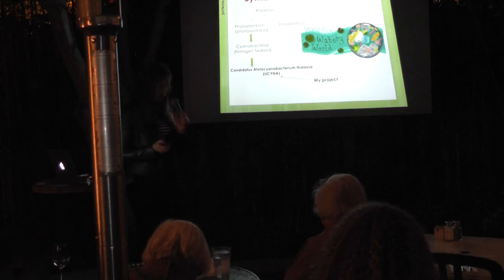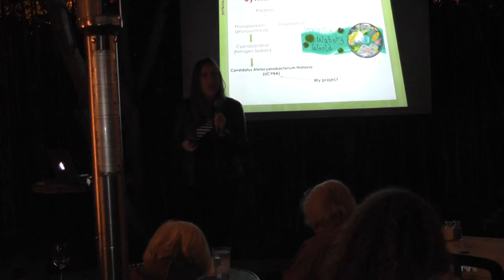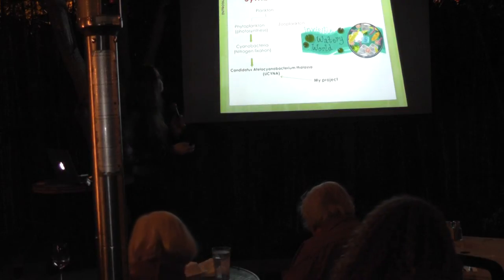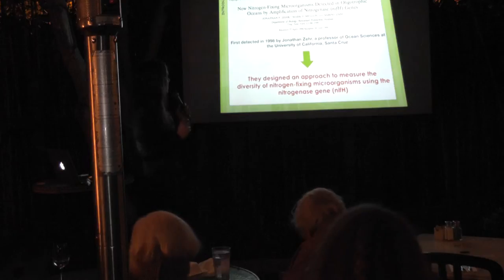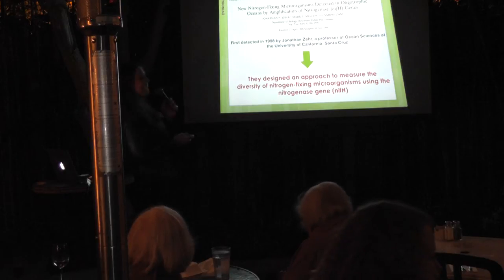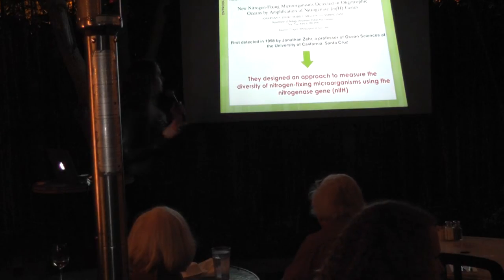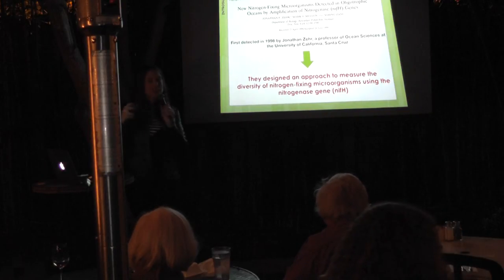But how was this cyanobacteria detected for the first time? Because it's very small and we need microscopes to see it. It was first detected in 1998 by Jonathan Zehr, a professor of ocean science at UCSC — who is my boss, and he's here today.